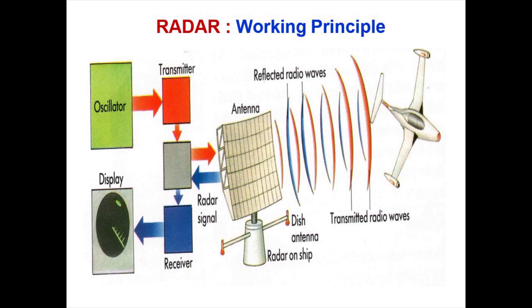The principle of radar: the oscillator is the first block of radar, which generates the analog signal. It is then converted to signal pulses and transmitted. These radio waves, if struck to an object, get reflected back. The antenna receives these radio waves, which are again amplified so that they can be displayed and a perfect judgment of an object can be made.